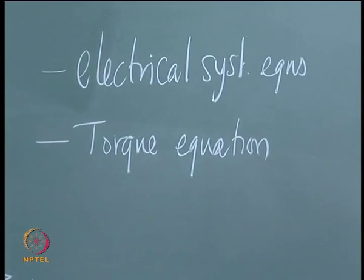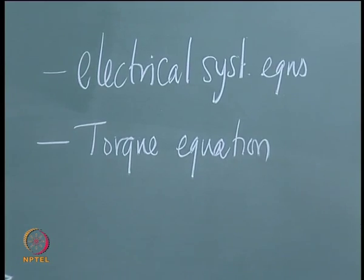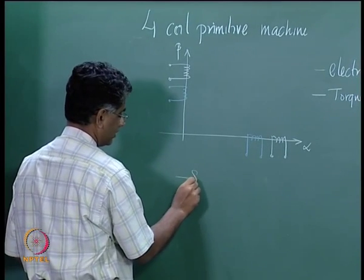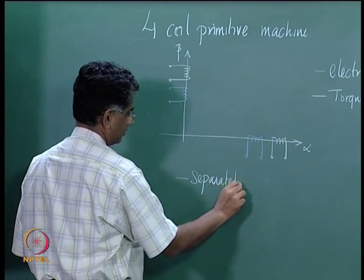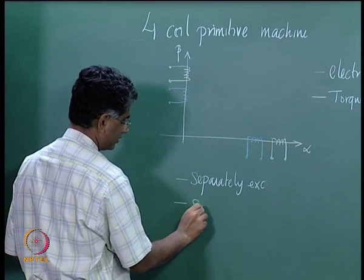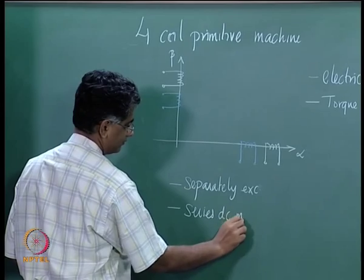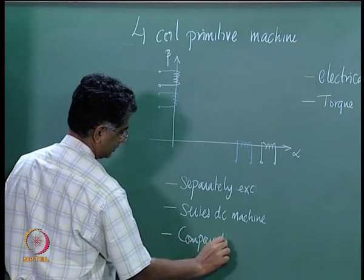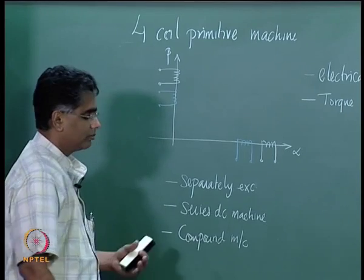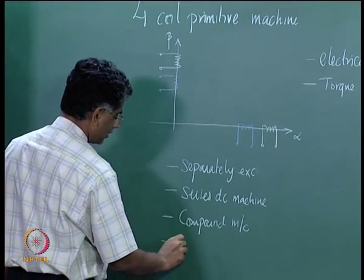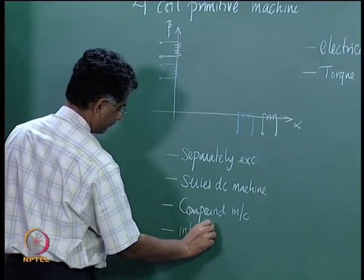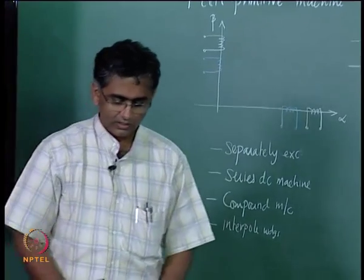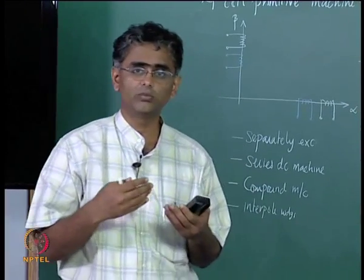From this description we saw how various representations for various DC machines can be arrived at. We have seen the expressions for a separately excited machine, then a series DC machine, then a compound machine, and a machine with inter-pole windings — all these different varieties can be developed from a description similar to this. Then we started looking at how these machine equations can be used for any application.